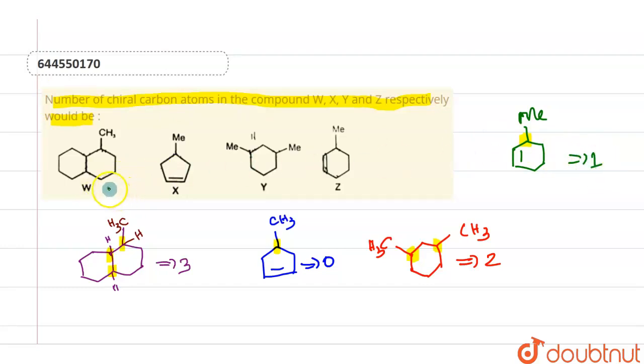So to conclude, we have three in the first one, zero in the second one, two in the third one, and one in the fourth one. That's it, thank you.